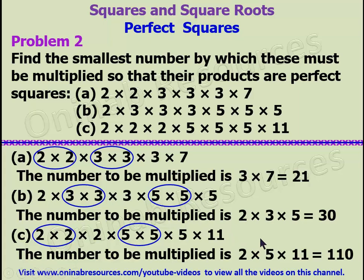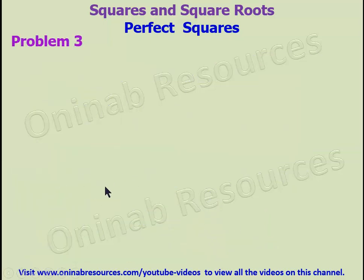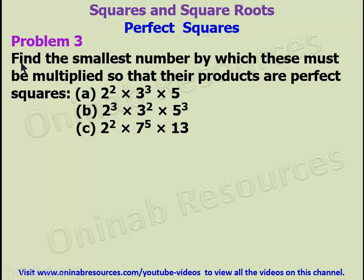So we are done with Problem 2. We go to Problem 3. For Problem 3, we are to find the smallest number by which these must be multiplied so that their products are perfect squares. The numbers here are given as a product of prime factors in index form.